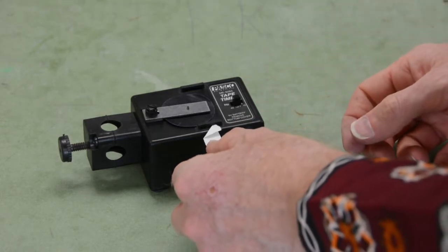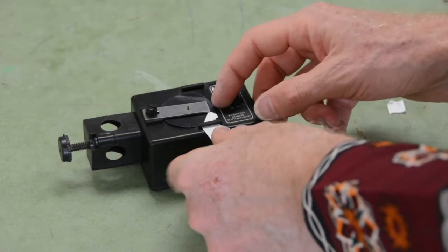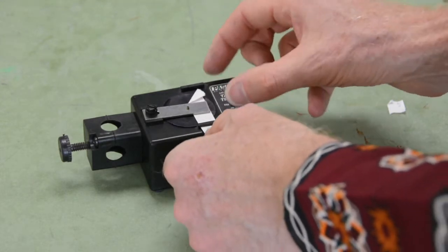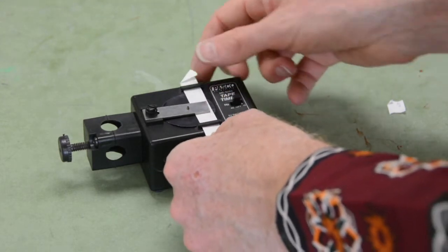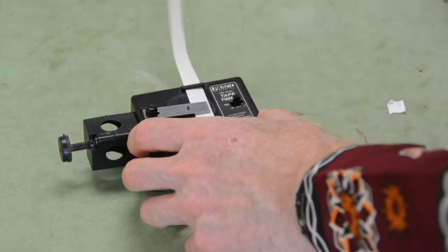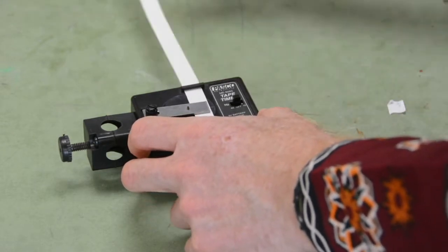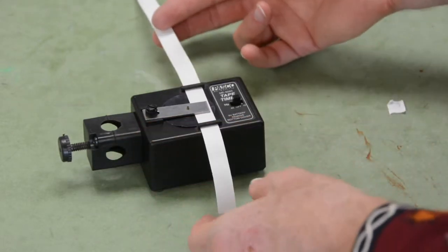It helps to curl it over a little bit. I want to get this over the carbon paper, under the plate, and through. It would have made more sense to thread it the other way.